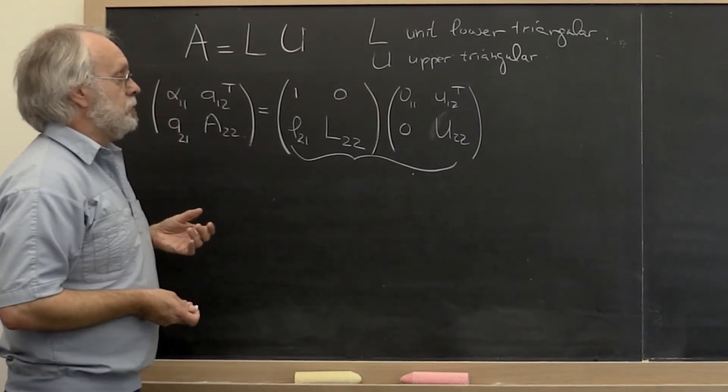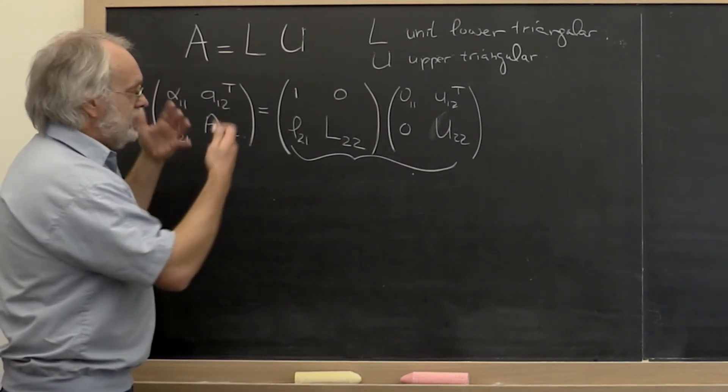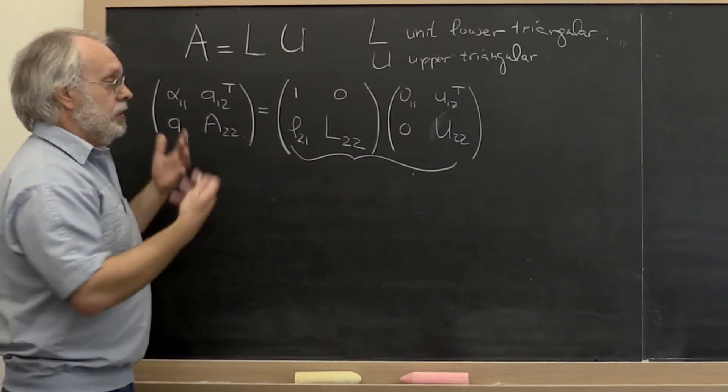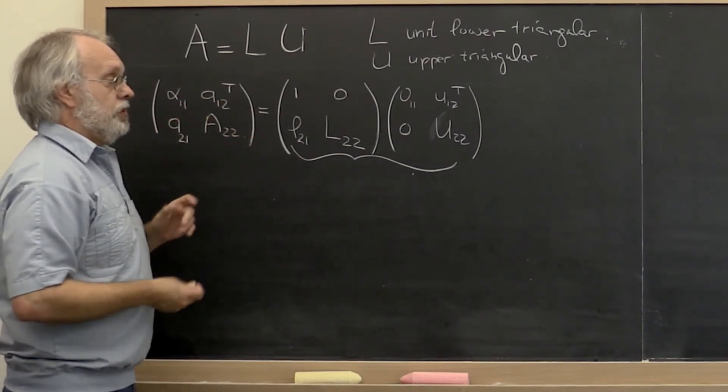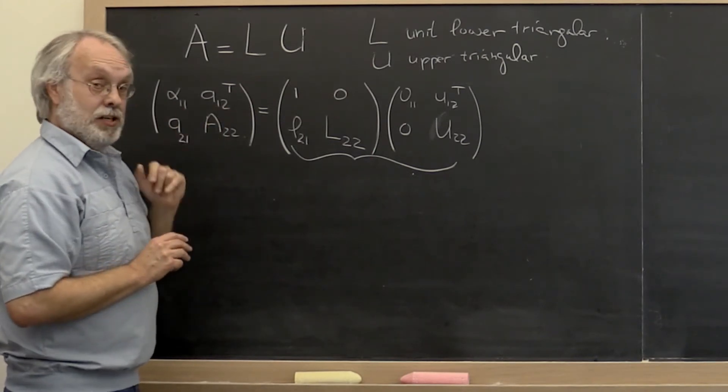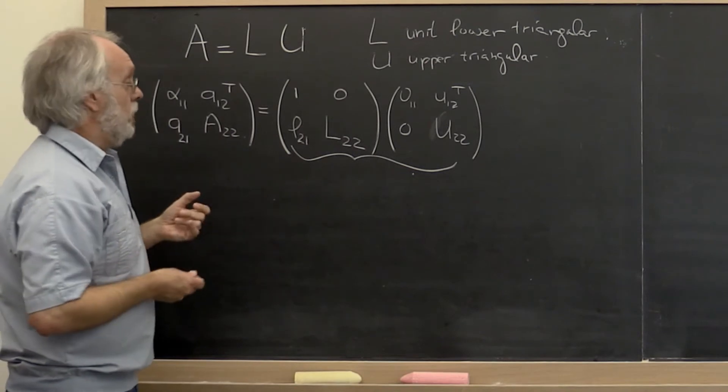How do we do partitioned matrix matrix multiplication? It's exactly like multiplying 2 by 2 matrices together, except that you do it with the symbols as opposed to with elements. And you can't necessarily commute.